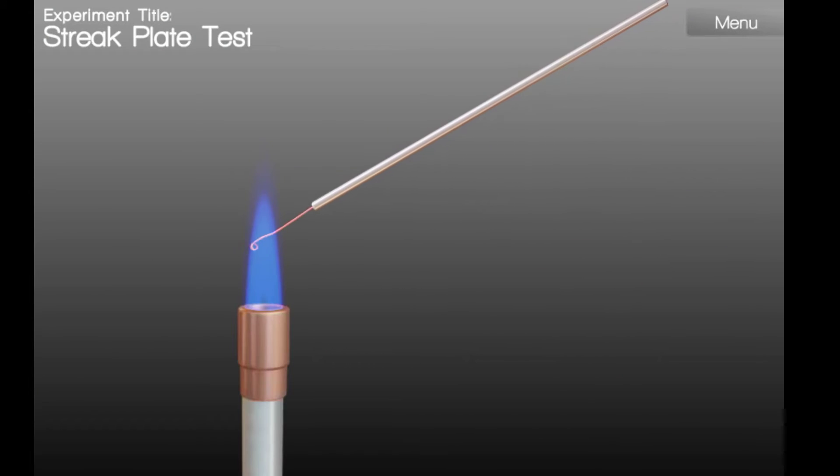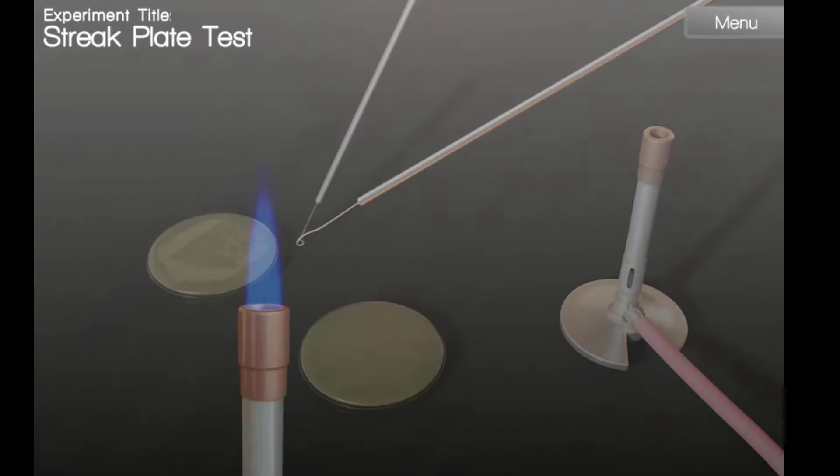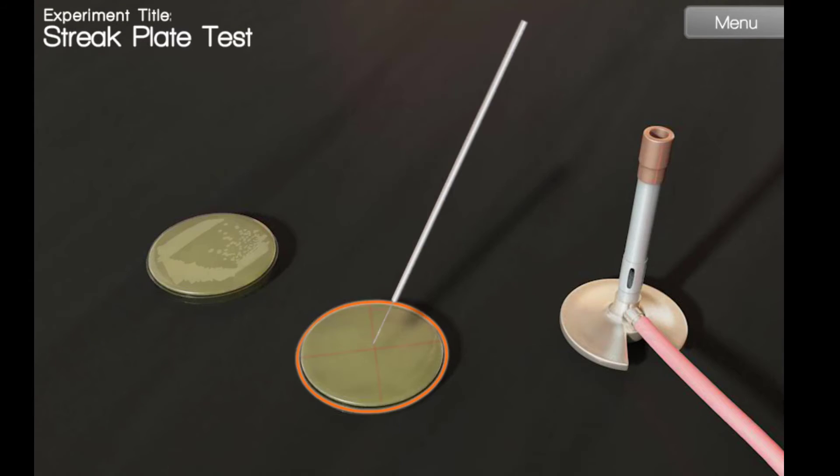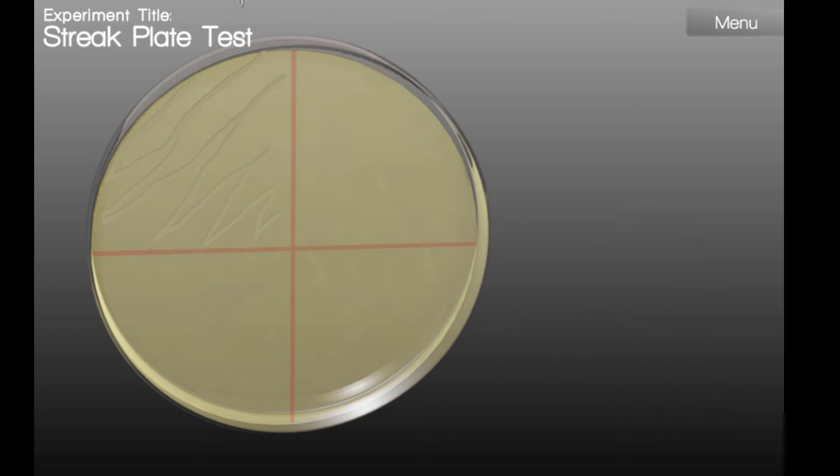Now we're going to flame the loop once again. This gets rid of any residual bacteria on the loop. Now we're ready to streak our second quadrant. When streaking the second quadrant, we're going to want to drag a small amount of the inoculum into the new quadrant.